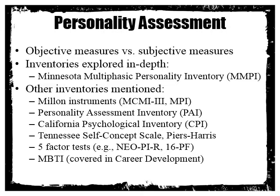The main inventory we're going to explore in depth today is the MMPI. Other inventories mentioned are the Millon instruments, the Personality Assessment Inventory, the California Psychological Inventory, the Tennessee Self-Concept Scale and its children's version the Piers-Harris, the Five Factor Tests, and the Myers-Briggs, which we'll briefly mention. The Myers-Briggs is most commonly used in career settings, and counselors do use it quite frequently.